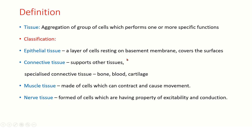Epithelial tissue is a layer of cells resting on a basement membrane and covers the surfaces, both internal and external. Connective tissue — the name itself speaks — supports or connects other tissues. Specialized connective tissue examples are bone, blood, and cartilage. Muscular tissue is contractile and causes movement. Nervous tissue is made up of cells which have the property of excitability and conduction.